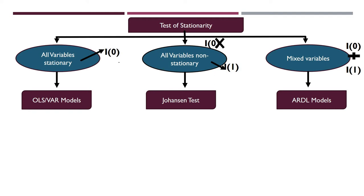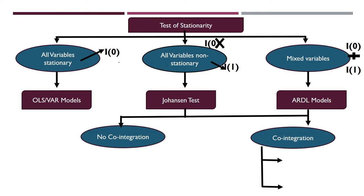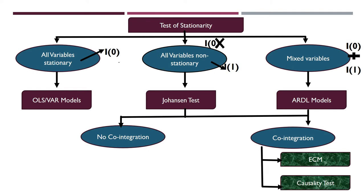The Johansen test and ARDL model are both related to the co-integration test. Both will give you a result on whether your data is co-integrated or not. If the data is not co-integrated, you stop — you cannot do further analysis. But if your data is co-integrated, you apply two further tests: the ECM (Error Correction Model) and the causality test.